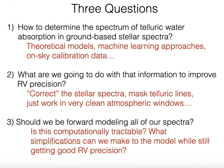This leaves us with three basic questions. First, how do you determine the spectrum of telluric water absorption in your ground-based stellar spectrum—using theoretical models, data-driven or machine learning approaches, or on-sky observations of hot stars? Second, and perhaps most important, what are you going to do with that information—correct the stellar spectrum, mask the telluric lines, or work in clean atmospheric windows? Third, should we be pursuing a forward modeling approach overall, and if so, is it computationally tractable? What simplifications can we make while still getting good radial velocity precision?